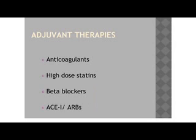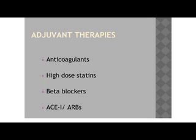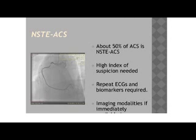Adjuvant therapies used with dual antiplatelets and fibrinolytic agents include anticoagulants — whether unfractionated heparin or low molecular weight heparin such as enoxaparin — at high-dose starting doses. Beta blockers should be started as soon as possible within the first 24 hours if there are no contraindications. An ACE inhibitor should be started if possible, or ARBs if there are contraindications to ACE inhibitors — particularly when the patient has a left ventricular ejection fraction less than 40% or anterior myocardial ischemia or infarction.